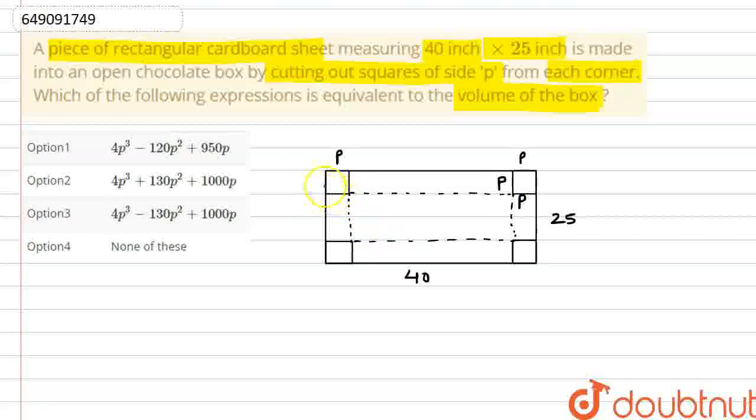Our height is P. So, we have to write here. Height of box. This will be P. Now, we have to find length and breadth. So, if this is 40. And here is P. And here is P.